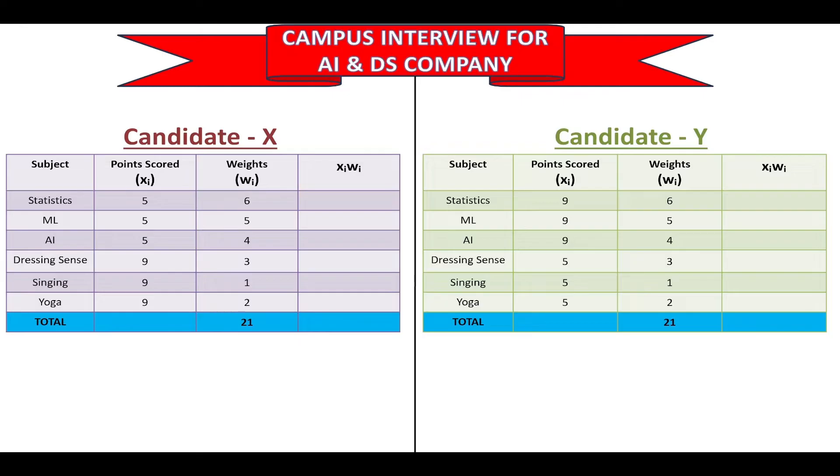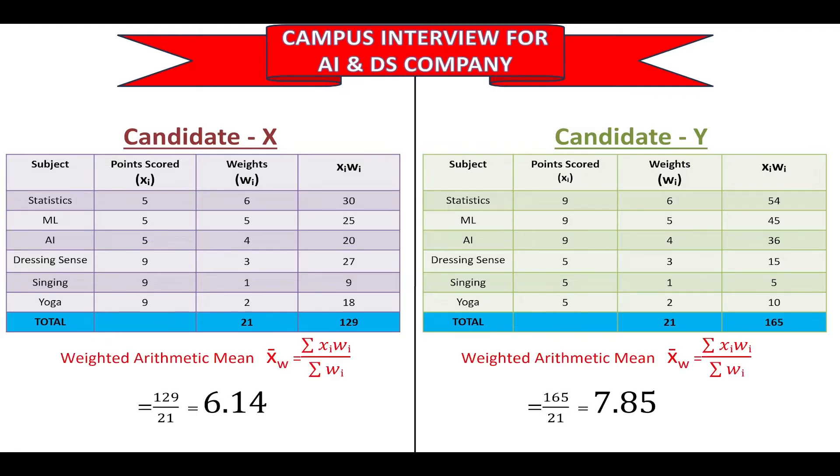Then after multiplying the item value by the respective weights, we will get summation of Xi Wi. Now applying the formula for Weighted Arithmetic Mean, we will see that candidate X has scored an average of 6.14 marks and candidate Y has scored an average of 7.85 marks. Hence we will reject candidate X and select candidate Y. Thus we were able to select the right candidate for our startup using the Weighted Arithmetic Mean.